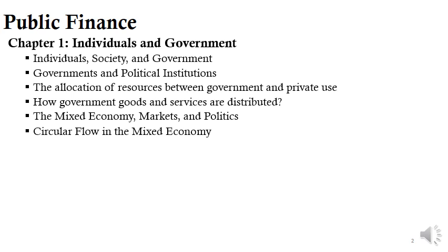Private goods and services — such as food — are usually made available for sale in markets at a certain price. While government goods and services such as roads, schooling, and fire protection are usually not sold in markets, or if priced, their price does not reflect the actual cost of providing those services.